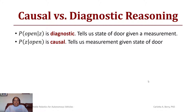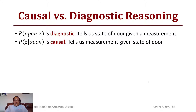Causal reasoning would be: given that the door is open, what is the probability that the sensor reads that the door is open? We know this is also not 100% guaranteed because sensors have error.